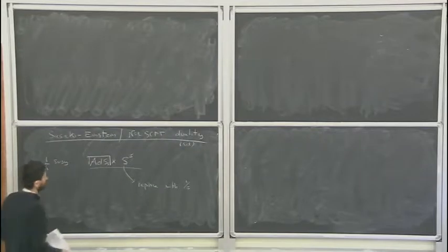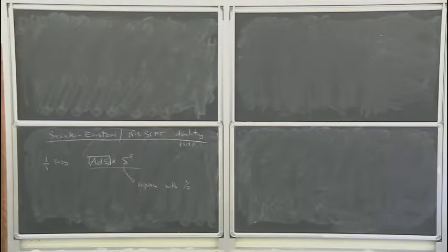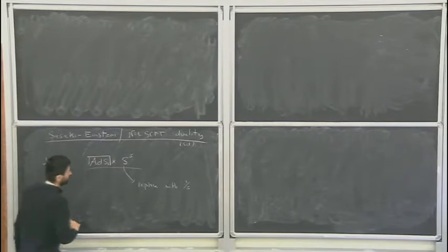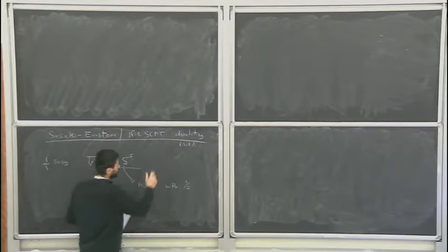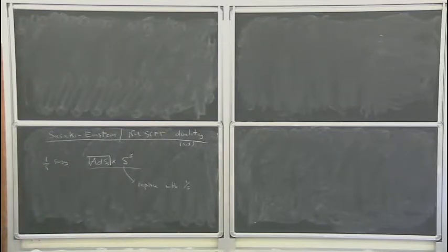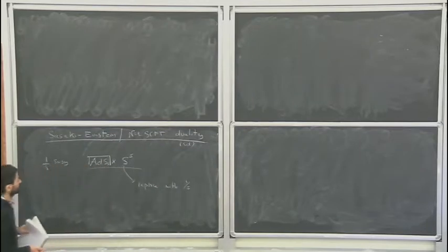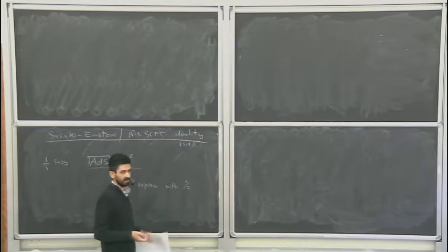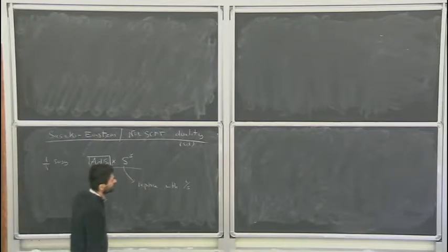I will start from the gravity side, work through from the equations of motion, impose the supersymmetry conditions — namely the Killing spinor equations — then explain the name and properties of these manifolds. From that we will learn lessons about what the geometry tells us about the field theory. We'll build up important constraints on the dual field theory. We'll talk about N equal one supersymmetry, hopefully something you've seen in Pomoni's lectures.